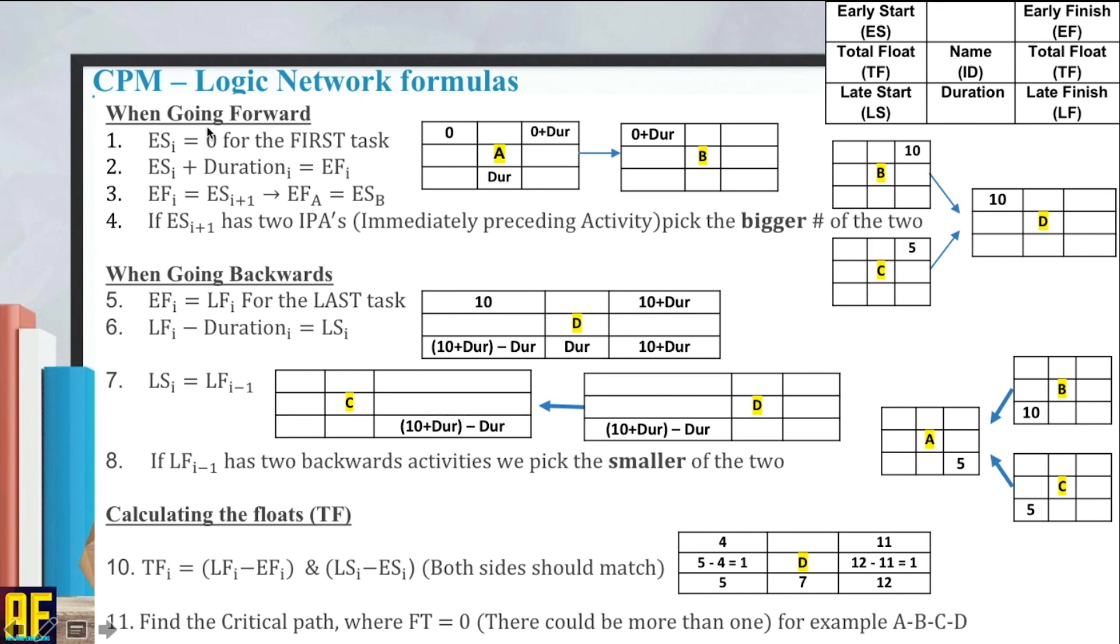Here it gets a bit messy, so stay focused. When going forward, my early start equals zero for the first task. Early start plus duration equals my early finish. Early finish equals the early start of my next activity. If my early start has two immediately preceding activities, IPAs, we pick the bigger number of the two. If I have two numbers here for my early finish, the number that I will pick for my early start is the bigger of the two when I'm going forward.